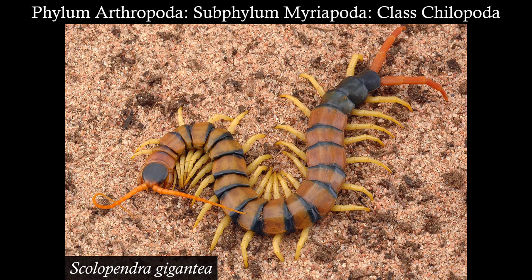Within Myriapoda, Class Chilopoda contains the centipedes. The one we need to know is Scolopendra gigantea, the giant tropical centipede, which can get about a foot long. It lives in moist tropical rainforests where it is primarily nocturnal, coming out at night to hunt for prey and sometimes catching small vertebrates. It has a fairly toxic venom. The first pair of appendages are maxillipeds, which are used to inject venom — a unique venom injection system.